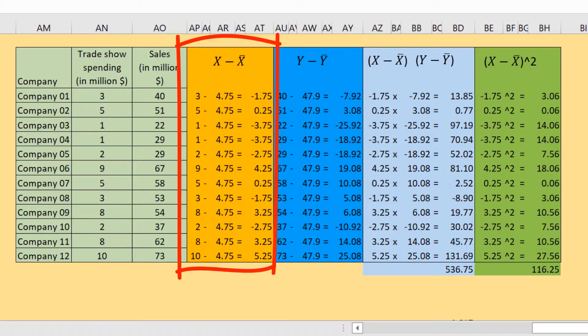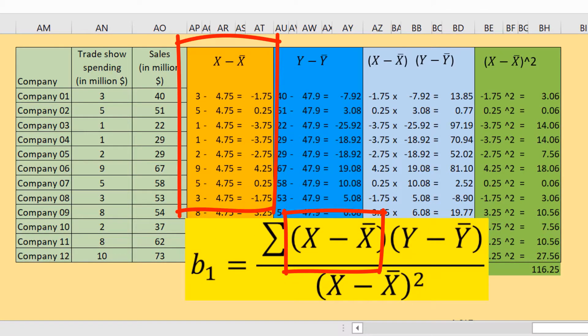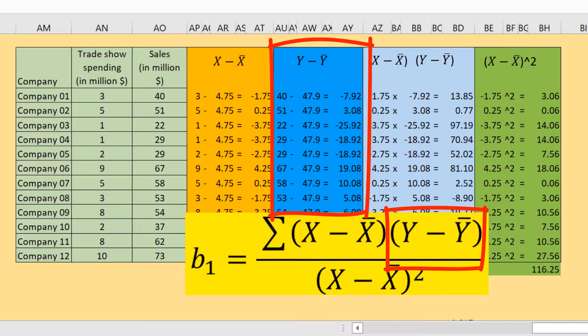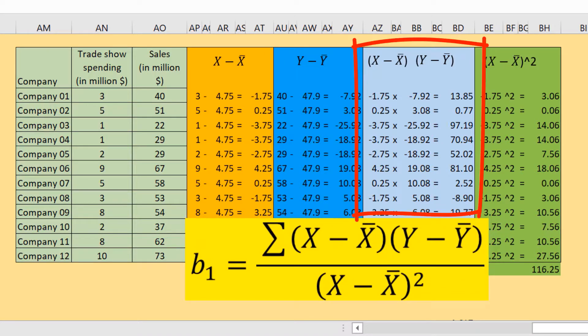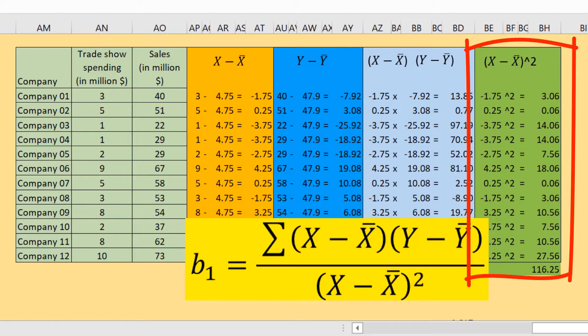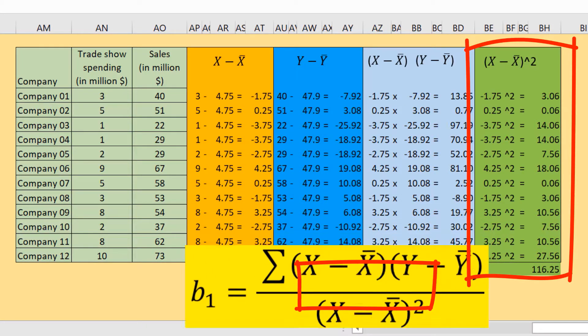This orange part of table corresponds to part of formula x minus mean of x. The dark blue part of table corresponds to part of formula actual value of y minus mean of y. Light blue part of the table is the product of the results from two previous columns which corresponds to this part of formula. The green column corresponds to the denominator: squared deviation from mean of x.